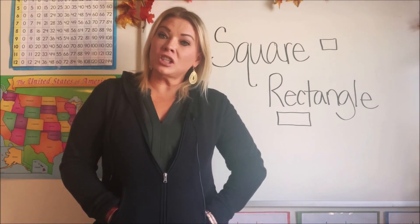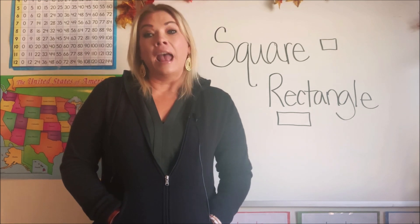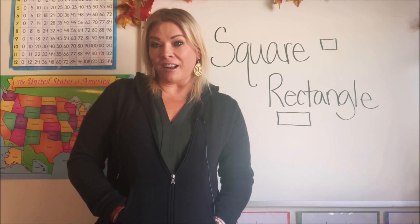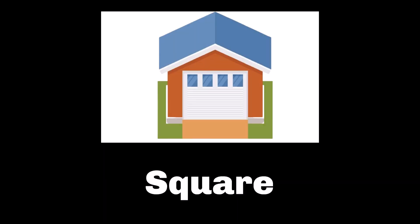Okay, now let's look at a couple of things that I found that are square and rectangle, and I bet you'll know what they are. Let's see if you can find these shapes. Is this a rectangle or a square? Well, a chalkboard is a rectangle. Look at this little house — the garage door on the house is a square. Do you see the white garage door that's a square?